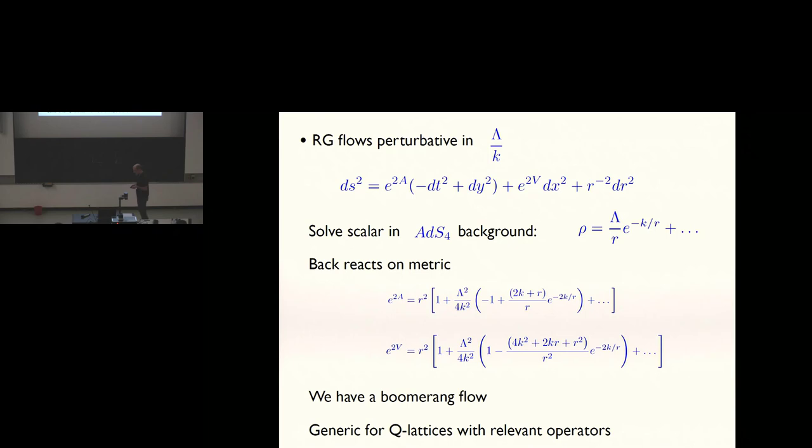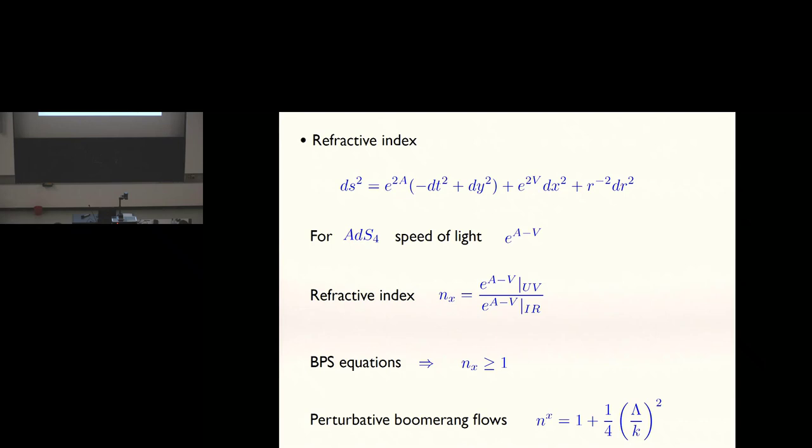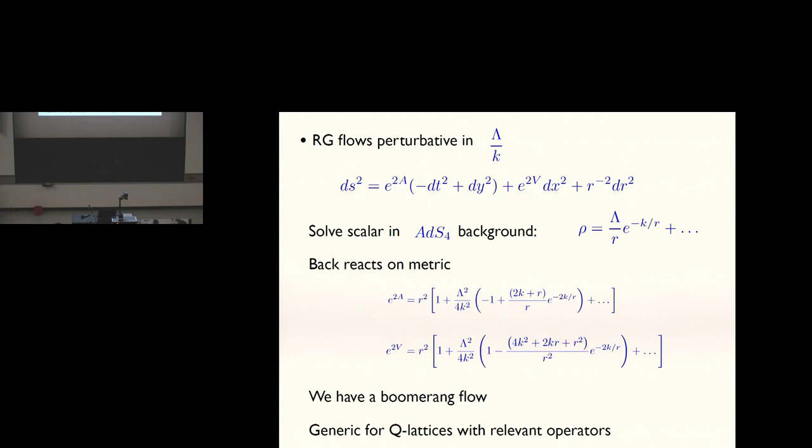For small perturbations around AdS, when you break translations by a relevant operator in a Q-lattice construction, you'll always get a boomerang flow. How about if lambda over k is not small? So let me say this point again. As we went to r of zero, this dies out and this dies out, and you're just left with this little correction here. This is the remnant of the renormalization, or it is the renormalization of length scales I mentioned at the beginning.